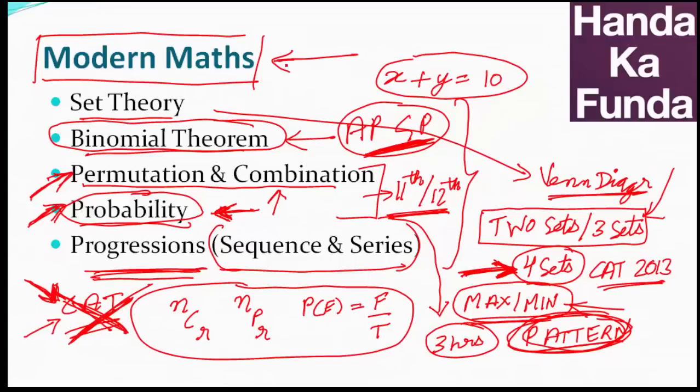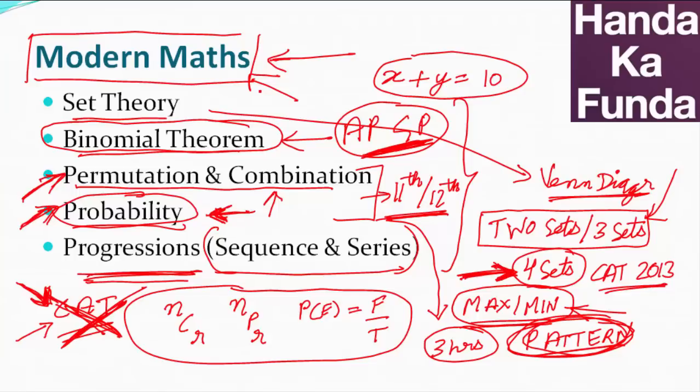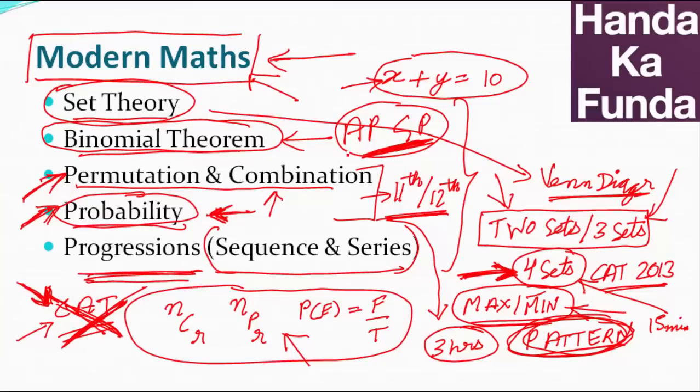I hope for this particular video, I have been able to clarify what is relevant in modern maths and what is not relevant. Just to summarize, set theory is very important. You will get questions on set theory in CAT, but they will mostly be on two sets and three sets Venn diagram. Four sets is not very important, but still it's good to know something that you can learn in 15 minutes. Maximum minima, absolutely useless. You should be comfortable with basic algebraic ideas. P and C and probability, just know the basic formulas which I have listed here and you should be good to go. For sequence and series, AP GP and pattern recognition is all that you are going to need.